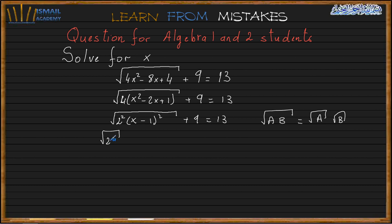So it's going to be square root of 2 squared square root of x minus 1 squared plus 9 equals 13. And we know that if I want to change square root of x minus 1 to the power half.